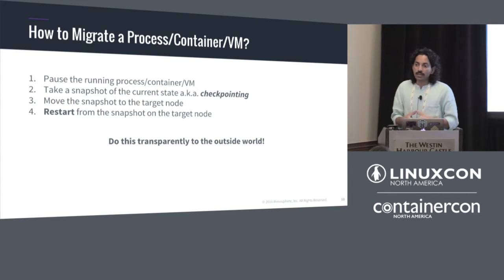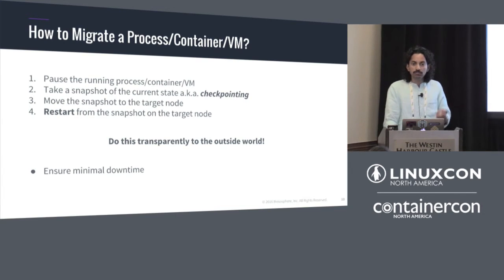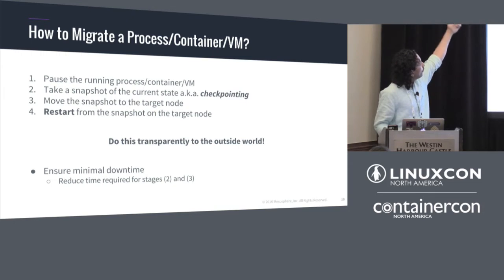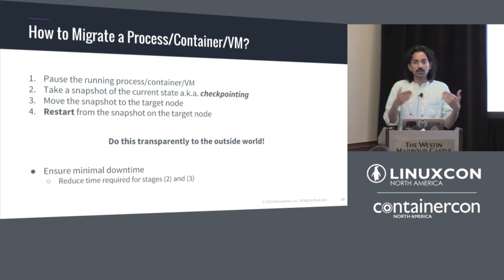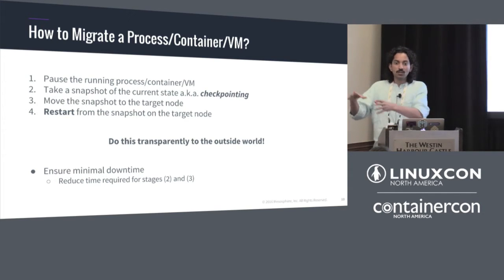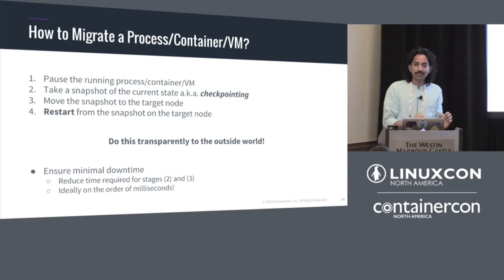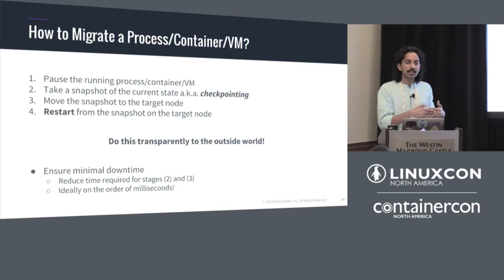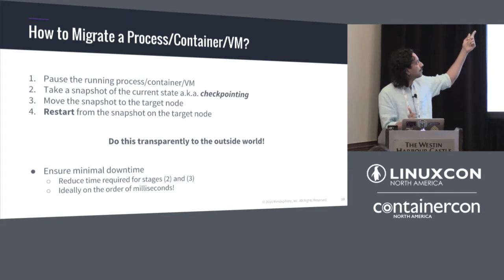One key thing in process migration is that it should not be visible to the outside world — you want minimal downtime. The biggest time consumed is in taking the snapshot and moving it to the new node. For a huge application, it may take seconds or minutes. Ideally you'd want this on the order of milliseconds. Techniques like demand paging, delta compression, and taking incremental snapshots help reduce the time spent in those steps.